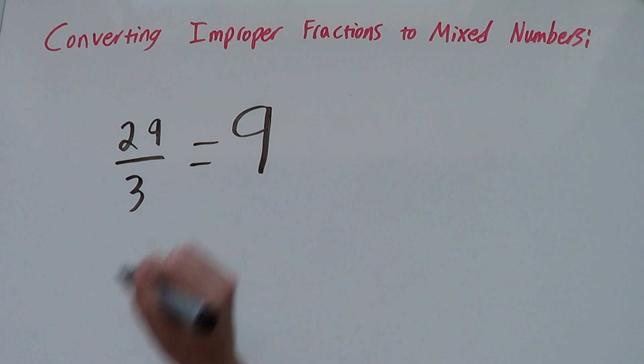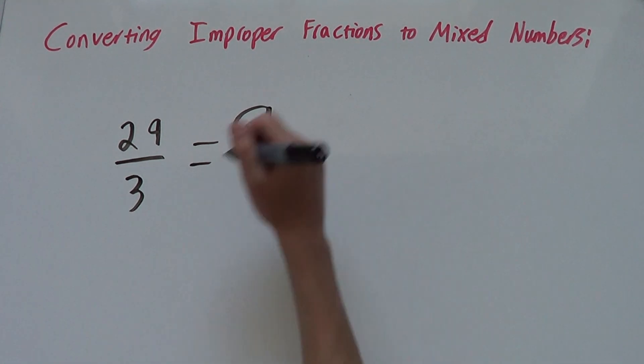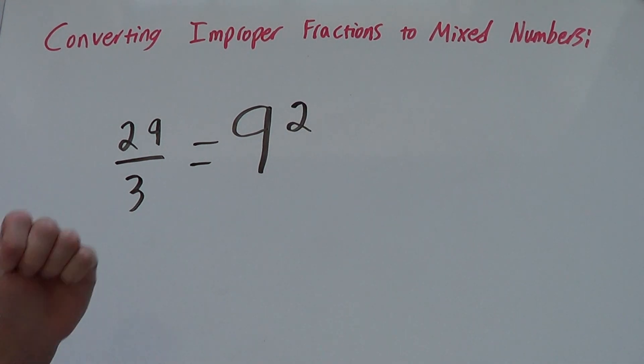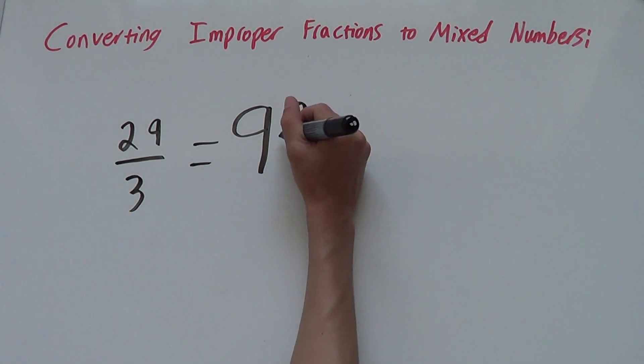So our number at the front will be 9 and then we will have a remainder of 2 because it's 27 and if we count to 29 we have 28 and 29. So 2 and our denominator will stay as 3.